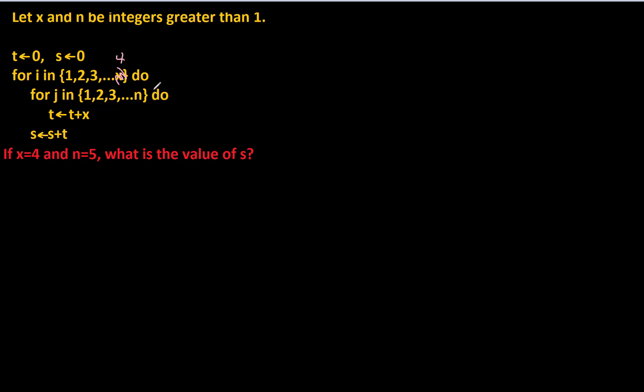And then we enter another loop, and this is for j in the set 1, 2, 3, all the way up through n. And in this case n is going to be equal to 5, so I could just put a 5 there. And then that makes it a lot more concrete to work through.